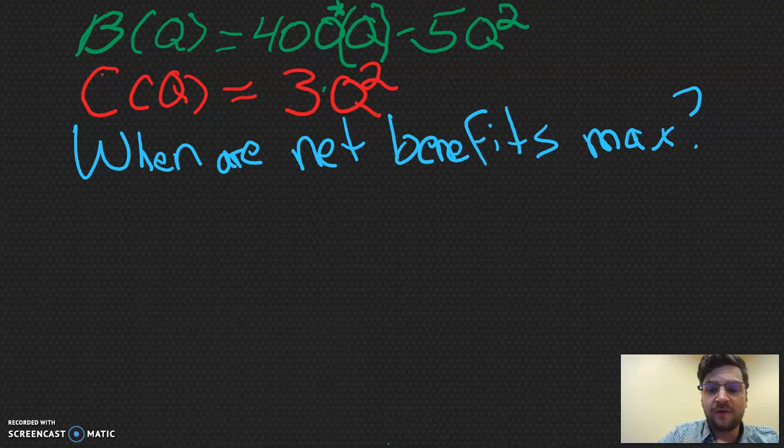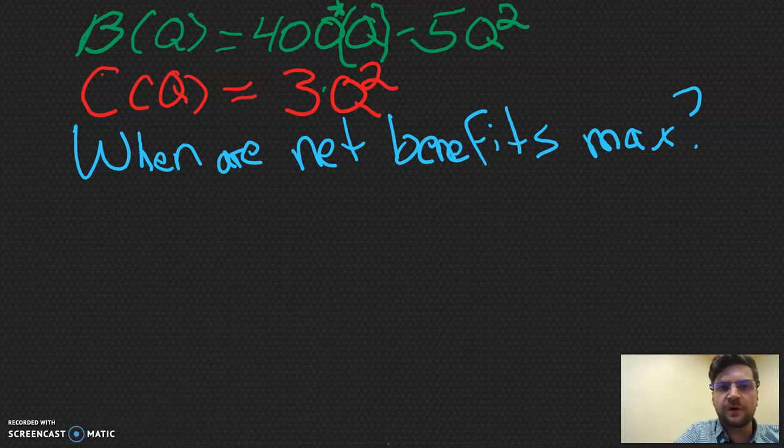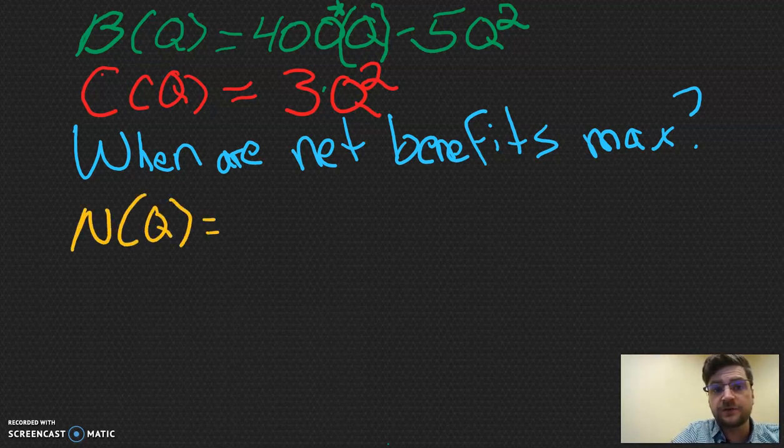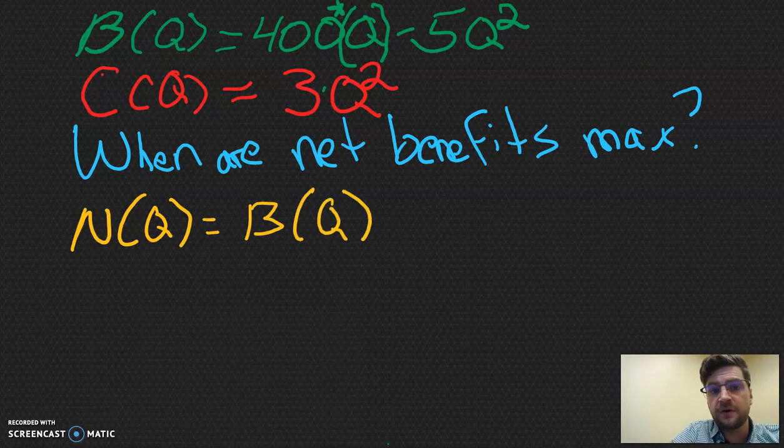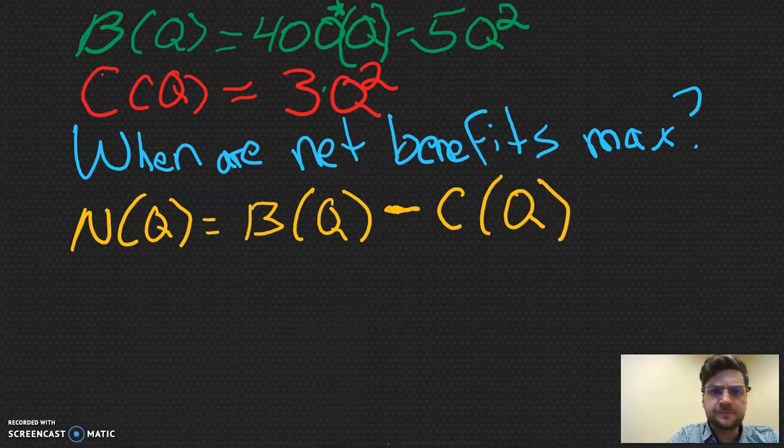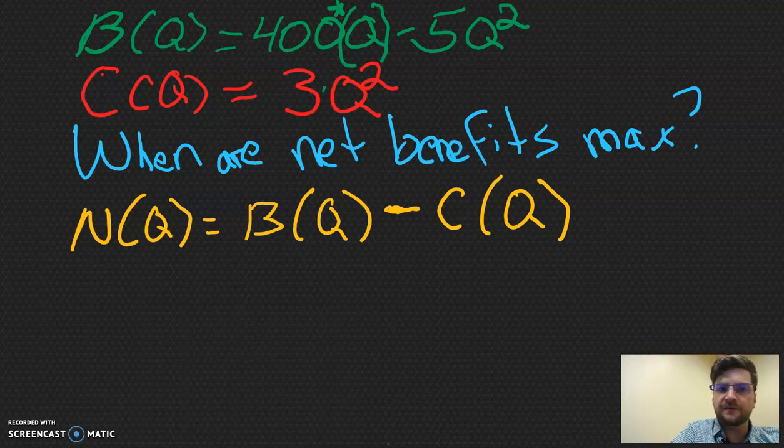So how do we do that? There's actually two ways that we can go about doing that. Let's go ahead and do the kind of way that we would normally think, and then let's do the shortcut way. The way that we would normally think of doing this would be, we would take the net benefit equation. The net benefit of Q is equal to the benefit of Q minus the cost of Q.